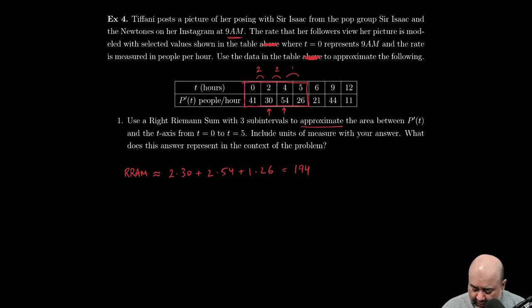We were told to include units of measure with our answer. So let's do unit analysis. Time times P'(t). The units of time are hours, and then the units of P'(t) are people per hour. So hours cancel with hours and then you're left with just people. So if we multiply the time by the rate at which people are watching this image, we're going to get 194 people.